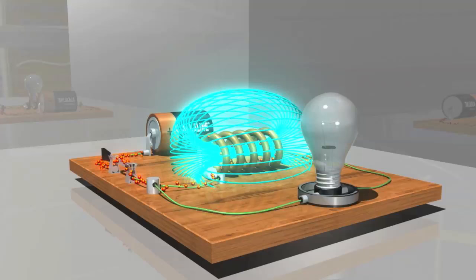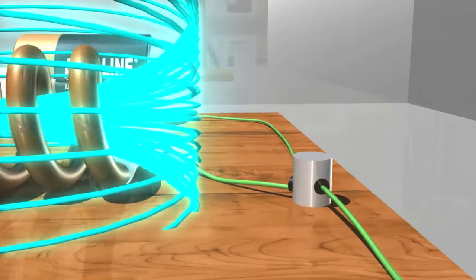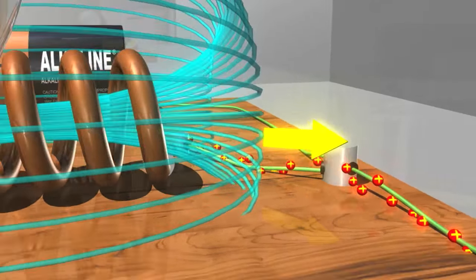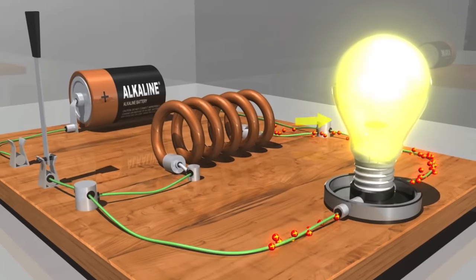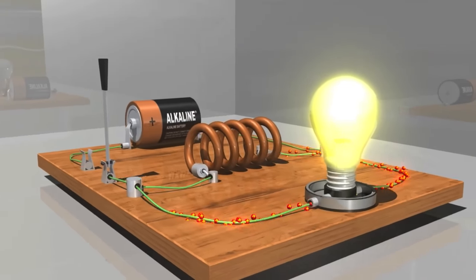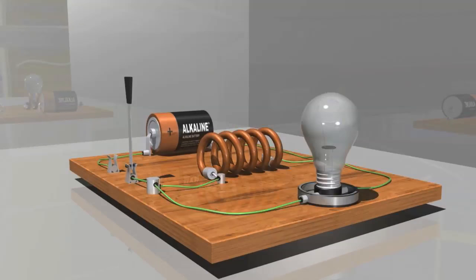The same phenomenon occurs when the magnetic field is shrinking, which happens when we open the switch and stop current flow from the battery. Once again, the back EMF opposes the change that created it. In this case, the change is the cessation of current, so opposing this change, the back EMF wants to maintain the current, which flows once again to the bulb, causing it to flash before it fades away altogether.